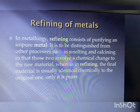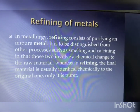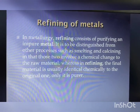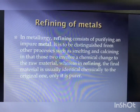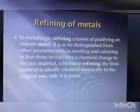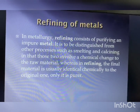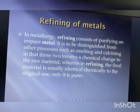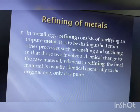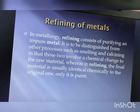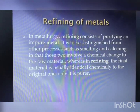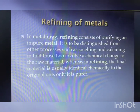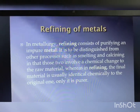The next topic is refining of metals. In metallurgy, refining consists of purifying an impure metal. It is distinguished from other processes such as smelting and calcination in that those two involve a chemical change to the raw material, whereas in refining, the final material is usually chemically identical to the original ore — only it is pure.